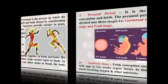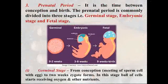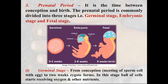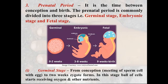The prenatal period is a very important biological factor of human development. It is the time between conception and birth. The prenatal period is commonly divided into three stages: the germinal stage, the embryonic stage, and the fetal stage. You can see the germinal stage as a bowl of cells, a small embryo, and then the fetus.